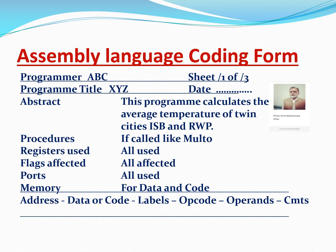Then we write down the procedures. I'll tell you what all these procedures are as we keep writing the program. For example, if you have to multiply two numbers, then instead of writing the multiplication instructions again and again, you develop a procedure — you write three, four, five, six multiplication instructions as a procedure and then call it whenever you require it. Similarly, the registers used — the registers which you have used in all these programs — are listed.